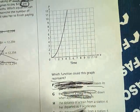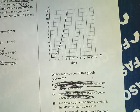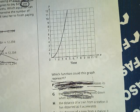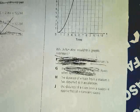So it's either the distance of a train from a station it has departed or the distance of a train from a station it approaches at a constant speed. These have two things that differentiate them.